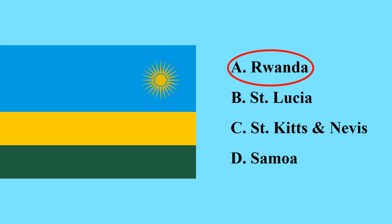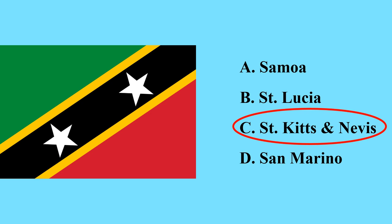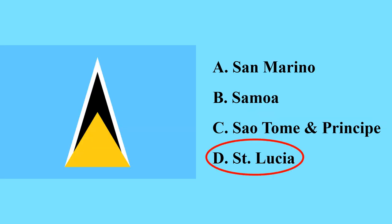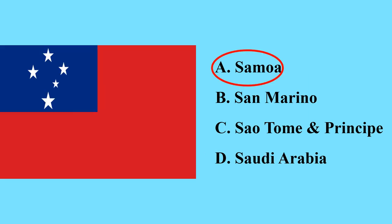This is the flag of Rwanda — its capital city is Kigali; it is a small country in Africa. This is the flag of Saint Kitts and Nevis, a country in North America. This is the flag of Saint Lucia — also a country in North America. This is the flag of Samoa, a country in Oceania.